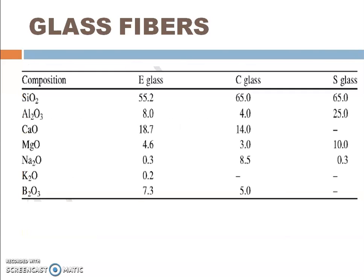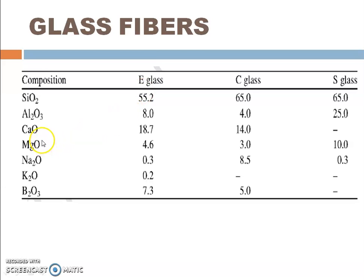Regarding the composition of different types of glass fibers, in E glass silica is 55.2%, while in C glass and S glass it is about 65%. Another major component of E glass is calcium oxide at 18.7%. These figures show the compositions of the different components present in E glass, C glass, and S glass.